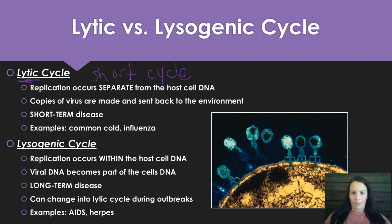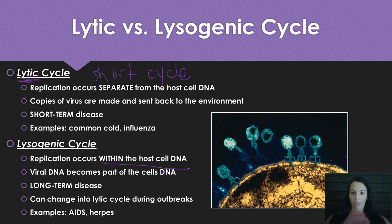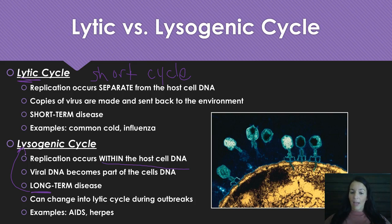Lysogenic, on the other hand, is a longer word and a longer cycle. Replication occurs within the host cell DNA, and that viral DNA becomes part of the cell's DNA. Every time that cell replicates, the viral DNA gets replicated as well. This is a long-term disease — long word, long-term. It can change into the lytic cycle during outbreaks, but you'll always have those cells with that virus. Examples include AIDS, HIV, and herpes.